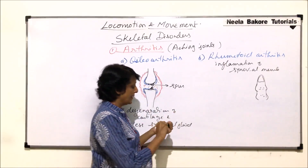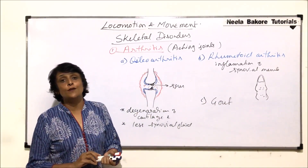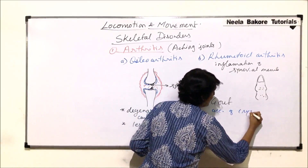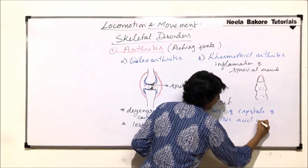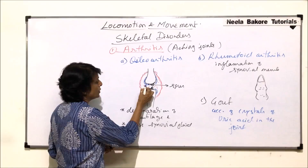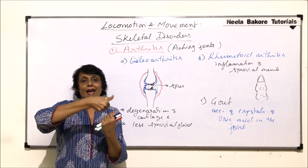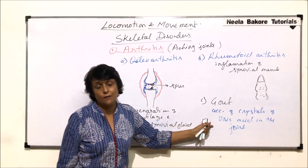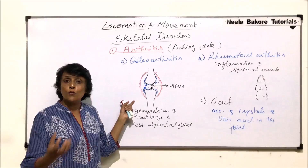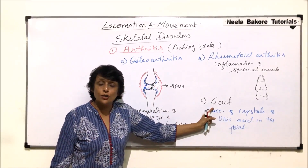The third type is known as gout. Gout is due to accumulation of crystals of uric acid in the synovial space. When these crystals get accumulated and stick somewhere, when we are walking they hit or touch each other, which is very painful. Gout is a dietary disorder — if we are consuming too much protein, which is responsible for formation of uric acid crystals, and they are not being eliminated from the body properly, then this condition is caused.